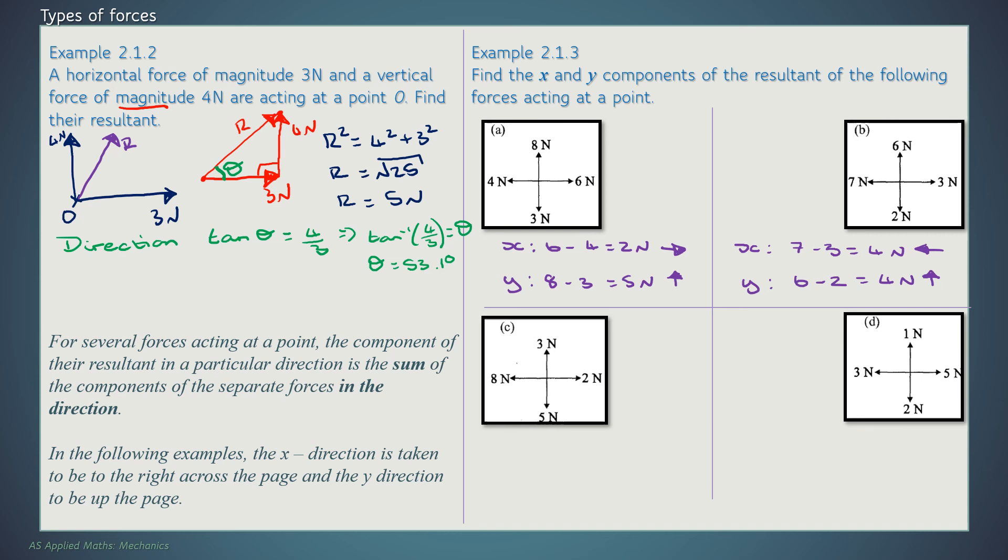If we're looking at part C, I've got 8 minus 2, which is 6 Newtons left. 5 minus 3, 2 Newtons down.